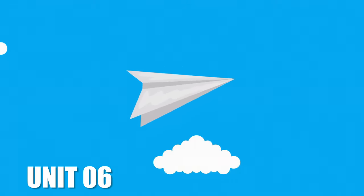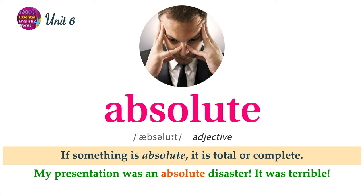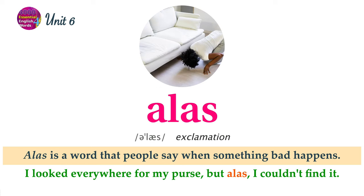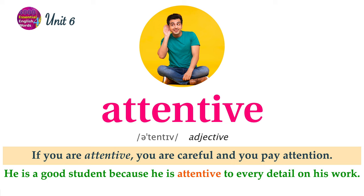Unit 6 Word List. If something is absolute, it is total or complete. My presentation was an absolute disaster. It was terrible. Alas is a word that people say when something bad happens. I looked everywhere for my purse, but alas, I couldn't find it. If you are attentive, you are careful and you pay attention. He is a good student because he is attentive to every detail on his work.